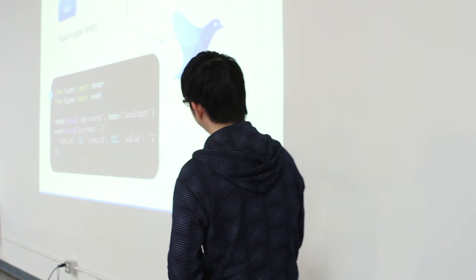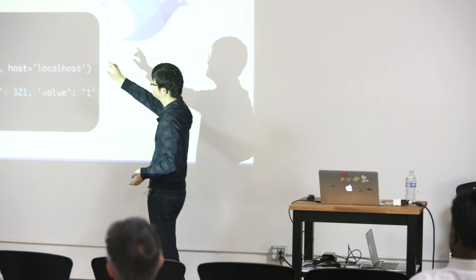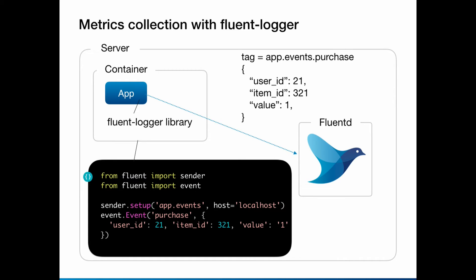Another idea is to embed a Fluentd logging library called Fluent Logger into your application. This is for more application-specific metrics information. For example, if you have an application that wants to log purchase information, whenever you have a purchase request, you call those methods. Then this goes to Fluentd as a JSON structure. You can store that data somewhere for data analytics or data integration.